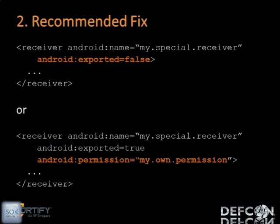Our recommended fix for intent spoofing is to use the exported flag when declaring components and explicitly make the component public or private — always explicitly state it and make it private whenever possible. If the component is supposed to be public, then consider limiting the interface by requiring that the sender has a permission. Even if the exported flag is true, it can also have a permission requirement. In any case, make sure that public components aren't performing any sensitive operations.